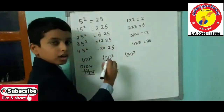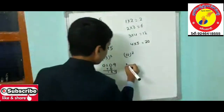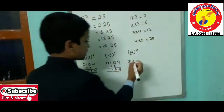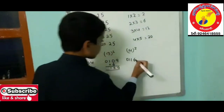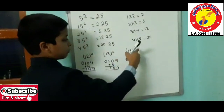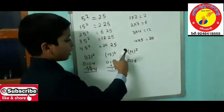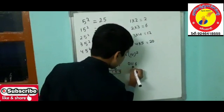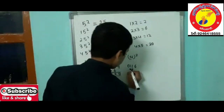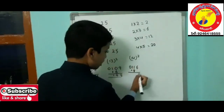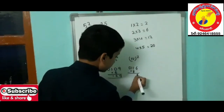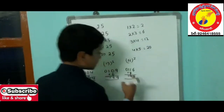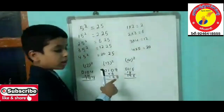For 14 squared: 1 squared is 1, write as 01. 4 squared is 16. Multiply the digits: 1 times 4 is 4, then 4 times 2 is 8. Leave 1 place and write 8 in the tens space. Add them: 6, 8 plus 1 is 9, 1. Therefore 196 is the square of 14.